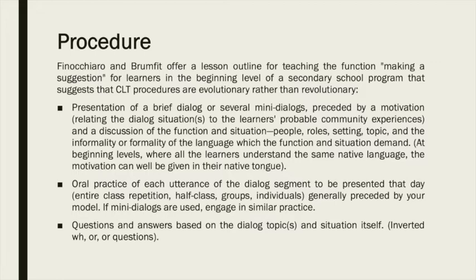Procedure: Finocchiaro and Brumfit offer a lesson outline for teaching the function of making a suggestion for learners at the beginning level of a secondary school program, suggesting that CLT procedures are evolutionary rather than revolutionary. Steps include: presentation of a brief dialogue or several mini-dialogues, preceded by a motivation relating the dialogue situation to the learner's probable community experiences, and a discussion of the function and situation — people, roles, setting, topic — and the formality level the function and situation demand. At beginning levels, where all learners share a native language, motivation can well be given in their native tongue.